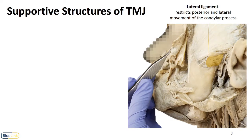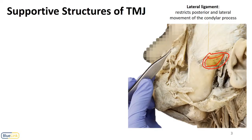Let's start by looking at the TMJ with the capsule still intact. You can see in this image the capsule is encompassing that joint. In the very lateral aspect of the capsule is where we find the lateral ligament, outlined here in yellow. You can think of it as part of the capsule that restricts some posterior and lateral movements.